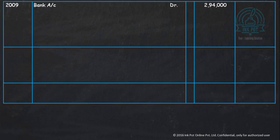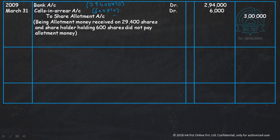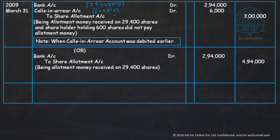Allotment has not been received for 600 shares × Rs. 10 each (Rs. 6,000). The shares that have received allotment are 29,400 shares × Rs. 10 each. The total allotment due was 30,000 shares × Rs. 10 each. So we directly write: bank account debit to share allotment Rs. 2,94,000, which is Rs. 3,00,000 minus Rs. 6,000.